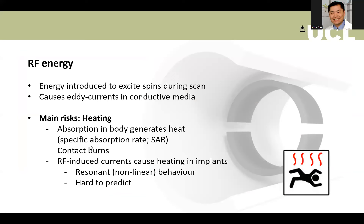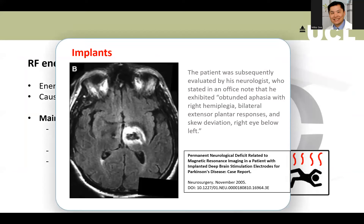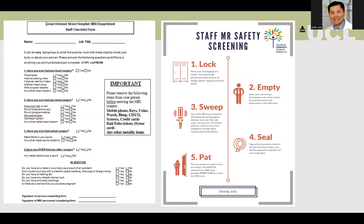Radio frequency energy can cause heating related to specific absorption rate and burns — not only surface burns, but also to devices implanted in the brain. This is illustrated by a case report of a deep brain stimulation device malfunction during MRI: a large area of brain burn was visible on imaging, contrasting with the contralateral intact implant. The patient was clinically unwell with abnormal neurology afterward. The number of implants and devices is increasing exponentially.